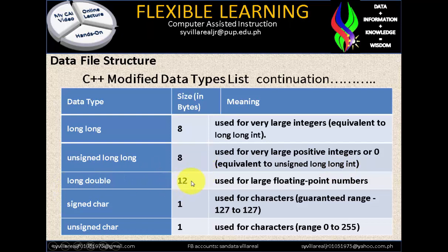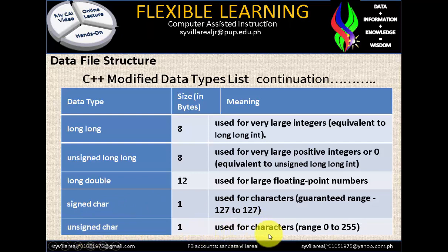Long double has size 12, used for large floating point numbers. Signed char: size 1, used for character, guaranteed range negative 127 to positive 127 characters — meaning you can store up to 127 characters. Unsigned char: size 1, used for characters, range 0 to 255, which we also use in terms of databases.